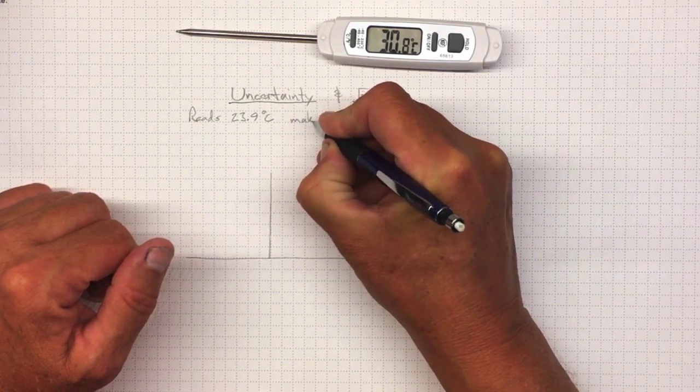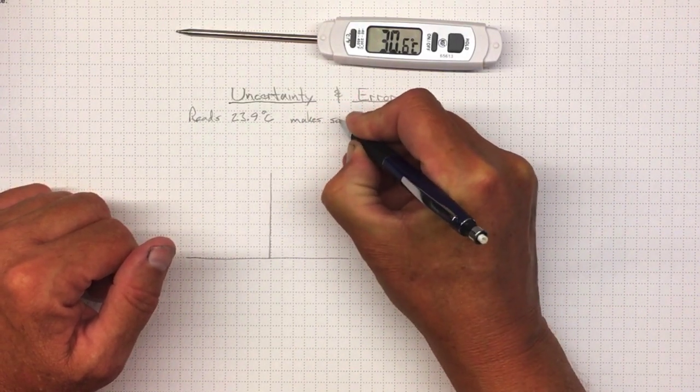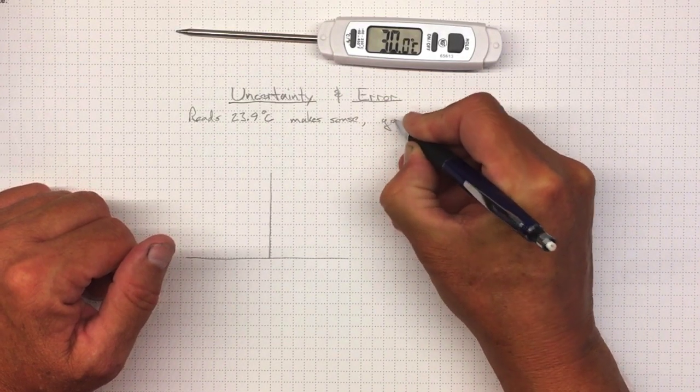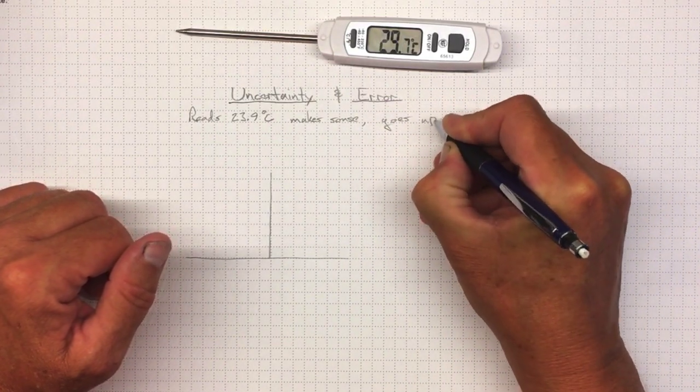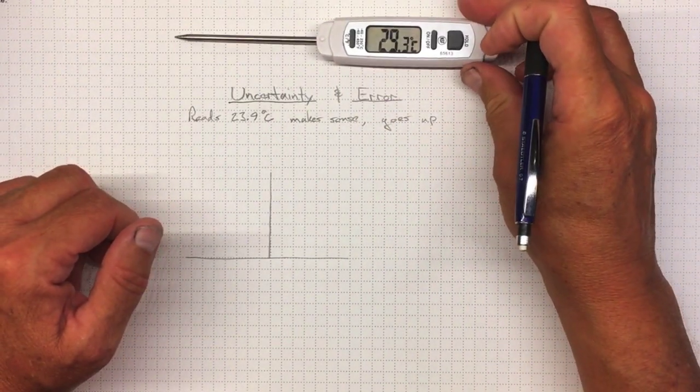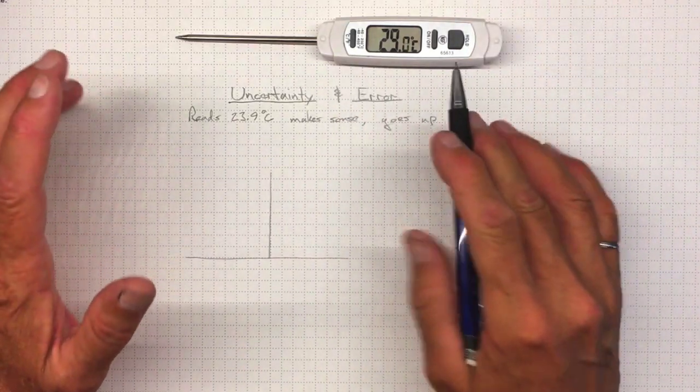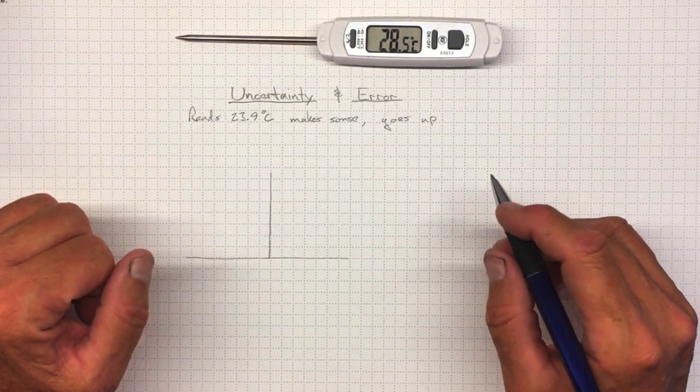So 23.9 Celsius makes sense, and when we warm it, it goes up. So we've got some fundamental validation that this temperature sensor is working in some ways that we understand about temperature.